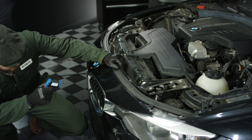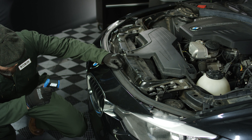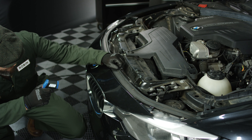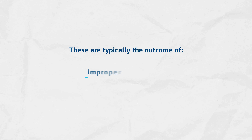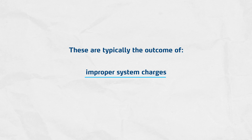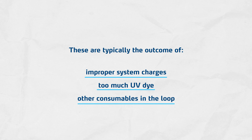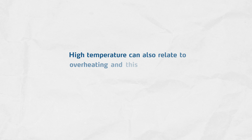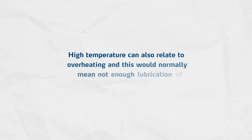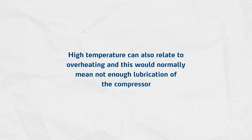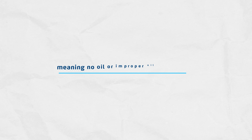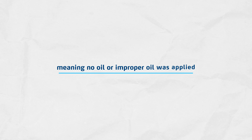Too high a temperature is also related to too high pressure in the system. These are typically an outcome of improper system charges, too much UV dye, or other consumables in the loop. High temperature can also relate to overheating, and this would normally mean not enough lubrication of the compressor — meaning there was no oil or improper oil was applied.